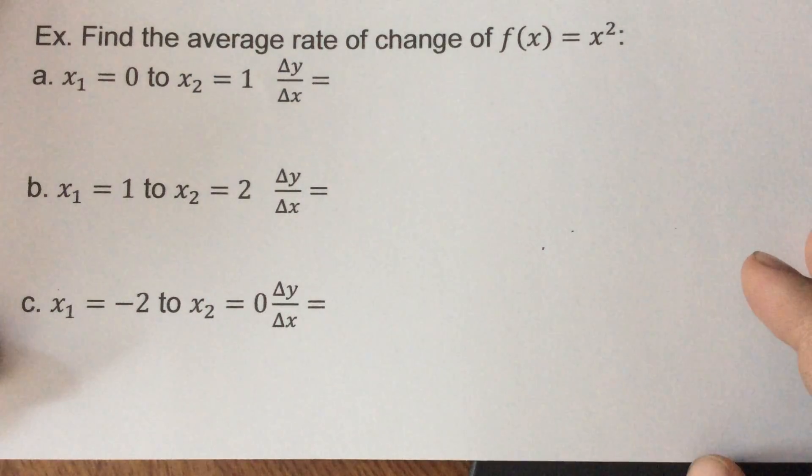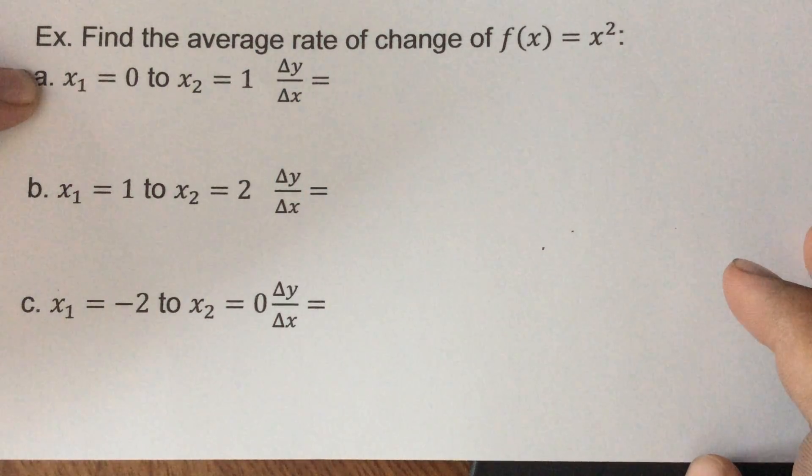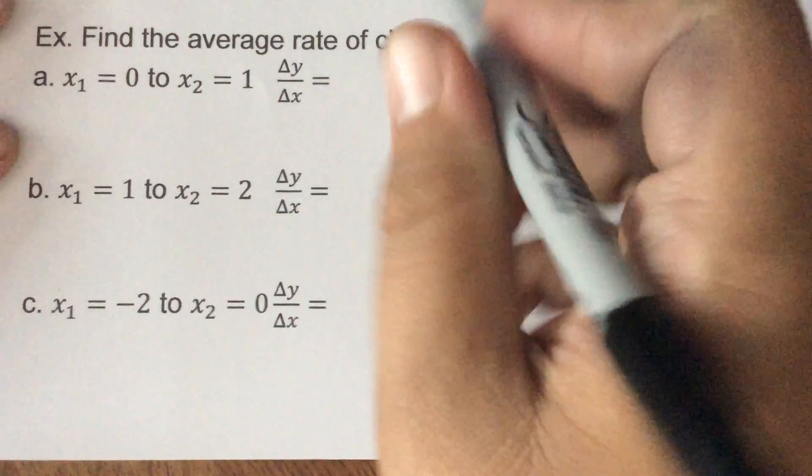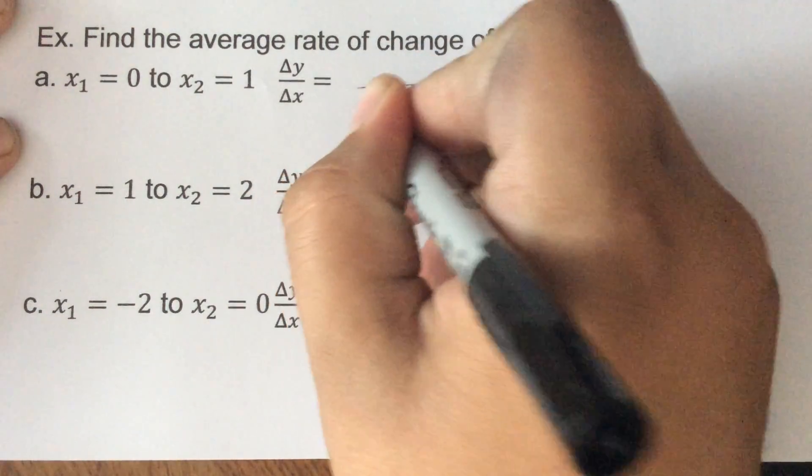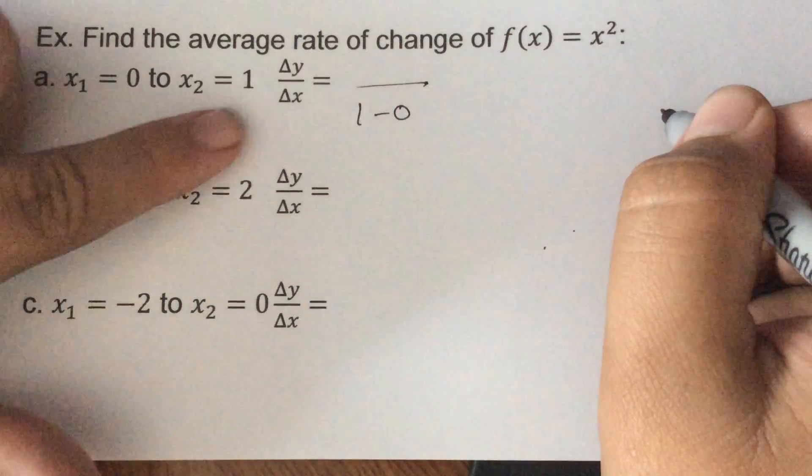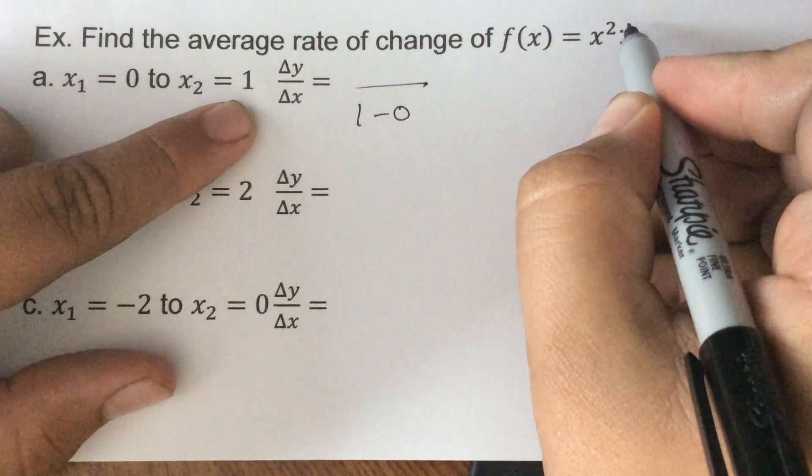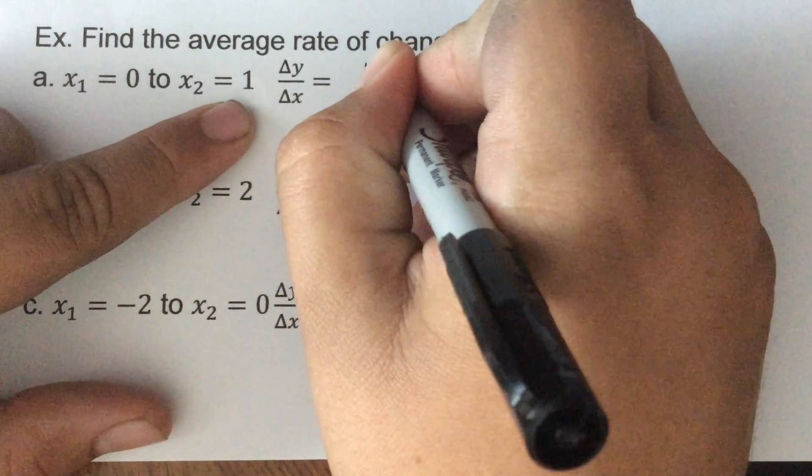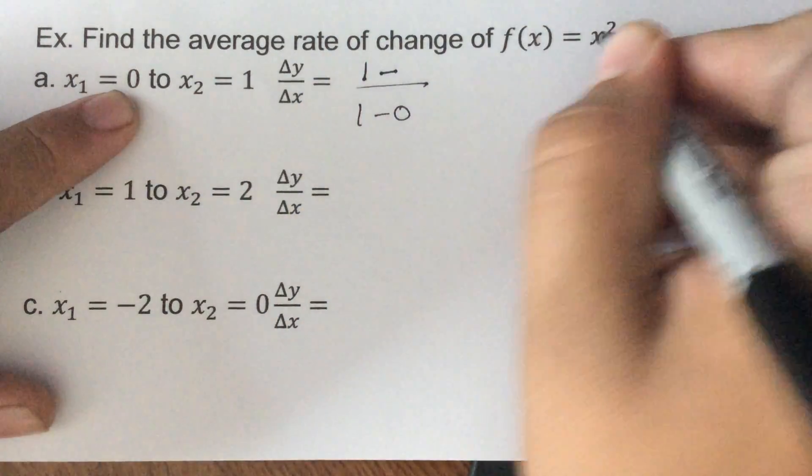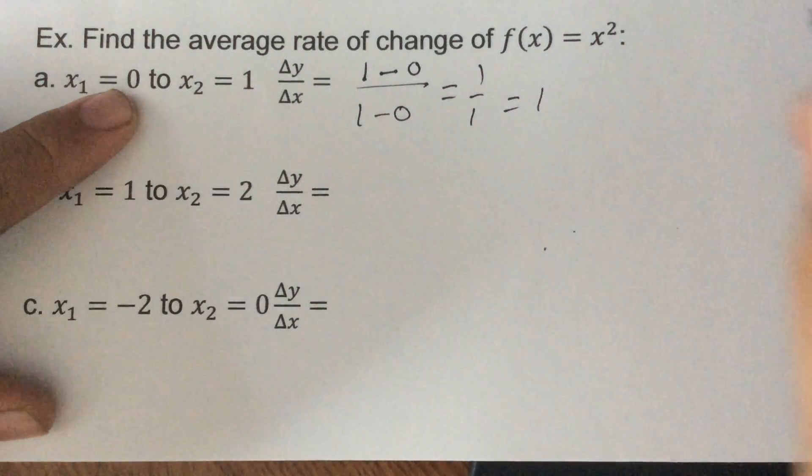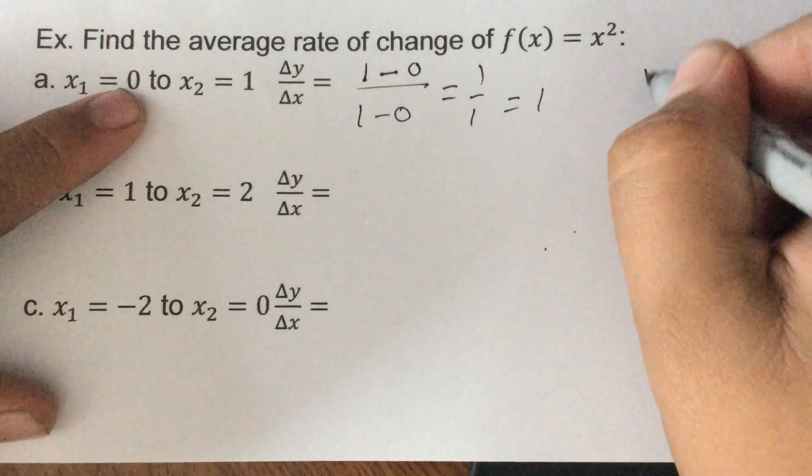So if we want to find the average rate of change of our function f(x) equals x squared, first we're going to deal with zero and one as our two x's. So the bottom would be one minus zero, to get the tops we would take the one and put it in there, so one squared would be one minus zero squared would be zero. We have one over one which is one. So to get those tops it's one squared minus zero squared which is one minus zero.